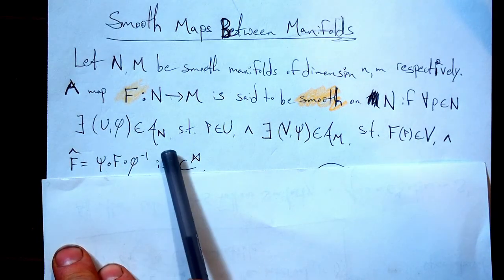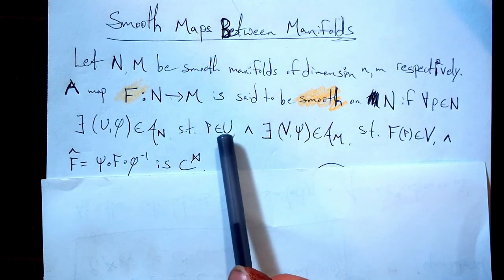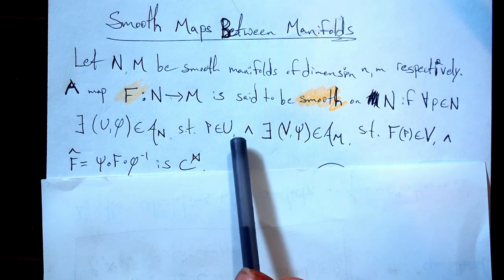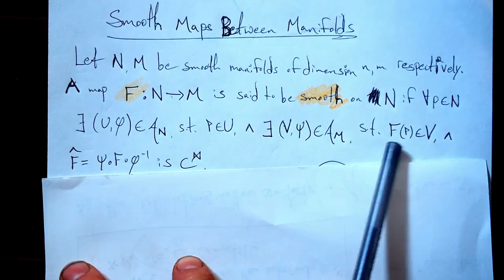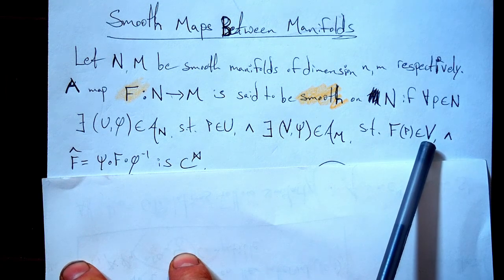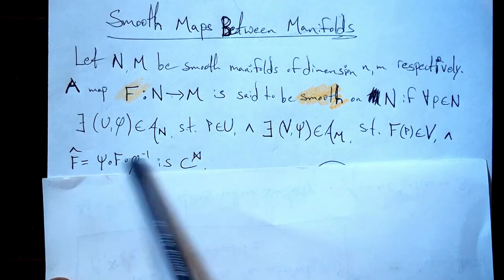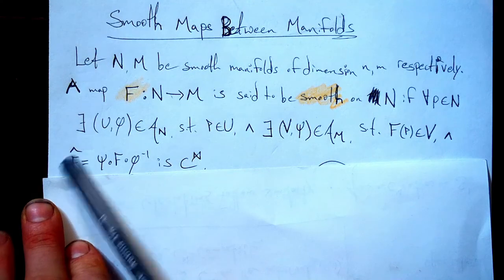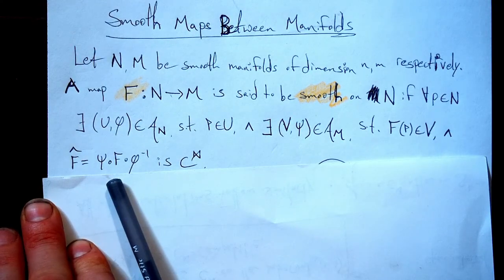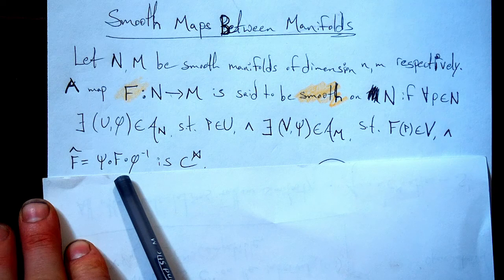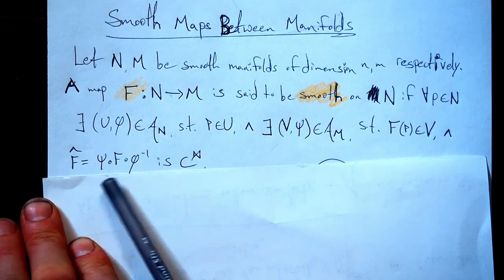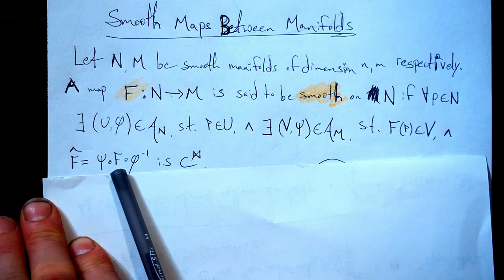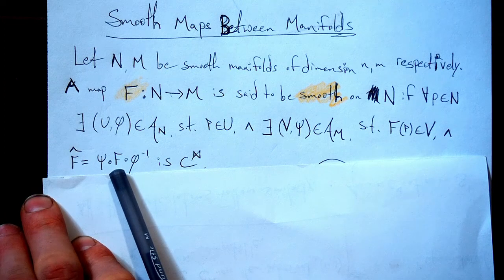there exists a chart in the atlas on N such that our point is in the open set. And there exists a chart on M, right, that's in the range, such that F(P) is in V. And we're now going to look at this guy. We're going to make this new function. We're going to give him a hat. And it's related to our old function using those coordinate maps. And we need it to be smooth. We need this guy to be smooth for us to call our map F between the two manifolds smooth.